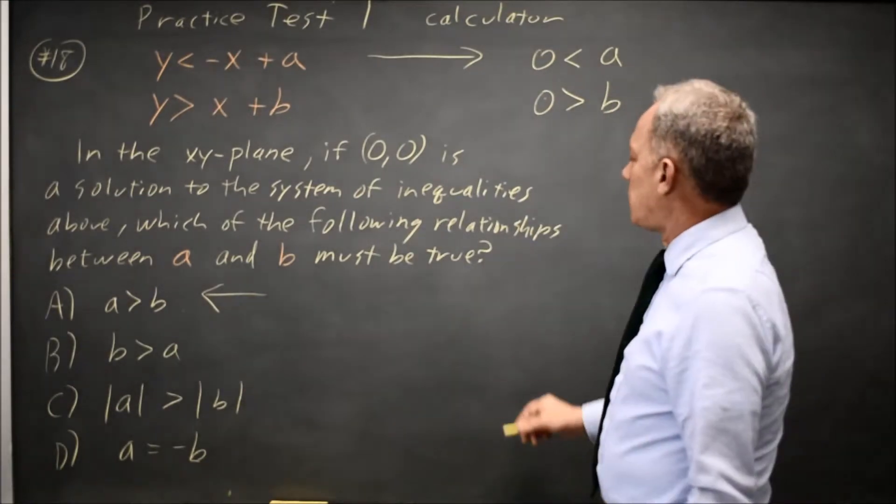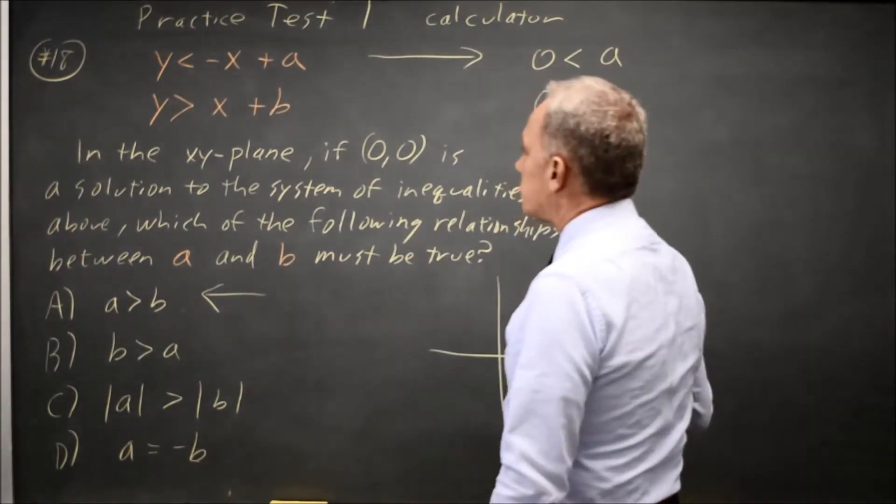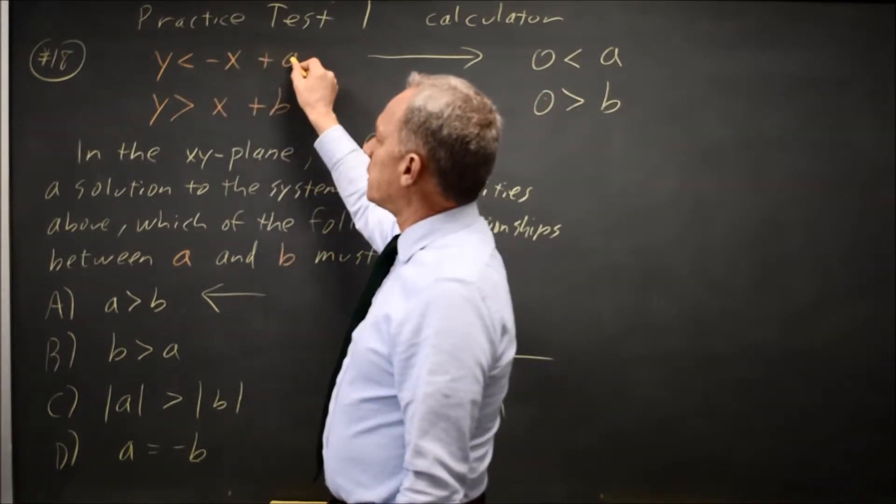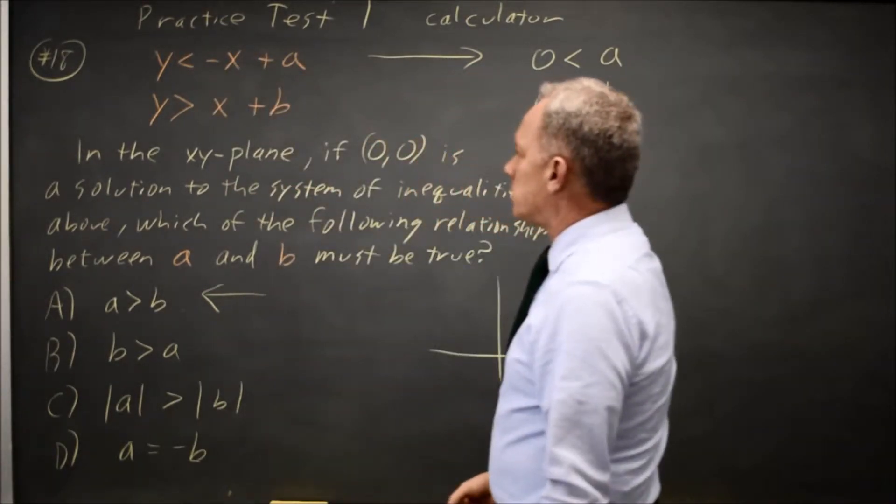Alternatively, I could graph the inequalities. The first inequality has a slope of negative 1 and an intercept of A, and the origin is a solution.